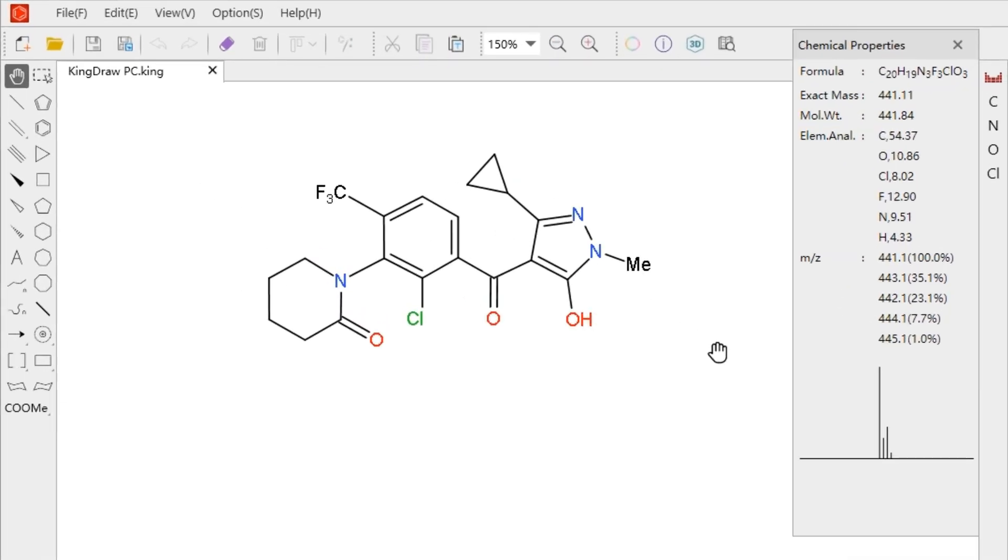In the chemical properties window, we can view the chemical formula, exact mass, molecule width, elemental analysis, and mass-to-charge ratio of the compound.